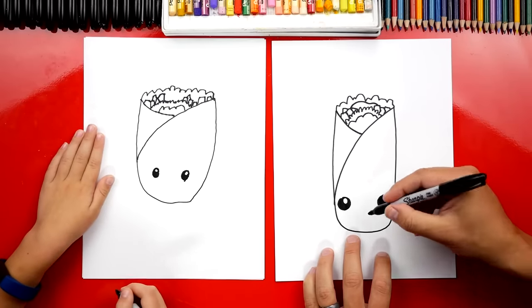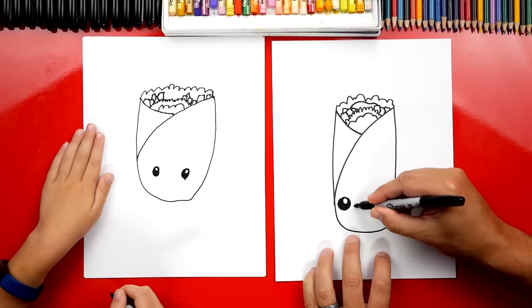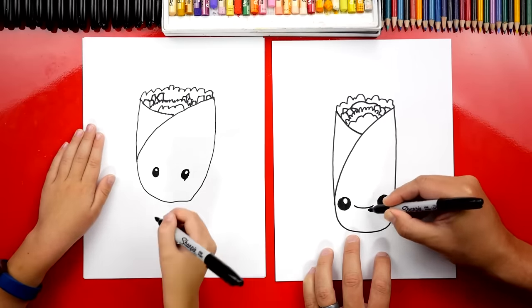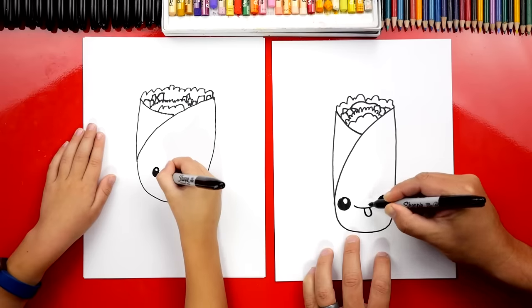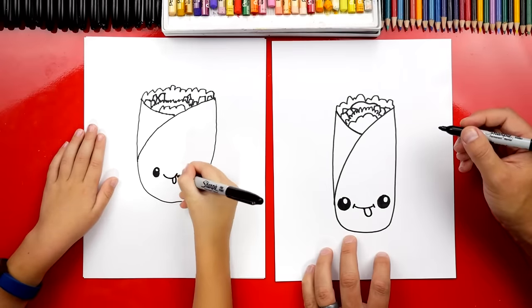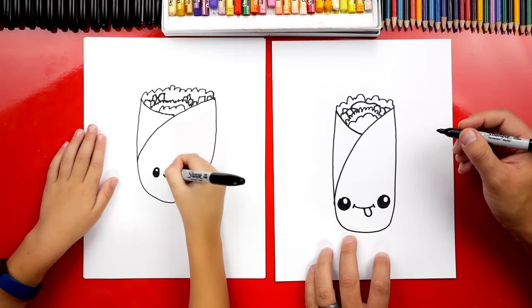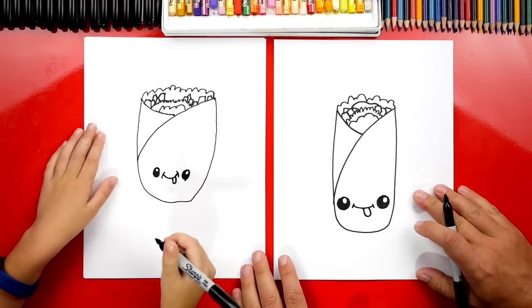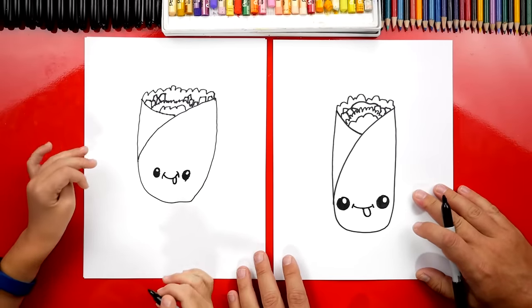All right, now we could draw a funny mouth in between. I'm going to draw a smile like this, and then I'm going to draw a little tongue sticking out the side. I'm also going to add little cheek lines. Perfect. Do you want to add little cheek lines? All right, we did it. We finished our burritos, our funny, funny burritos.